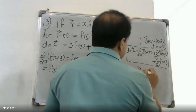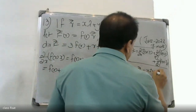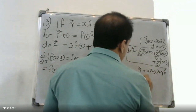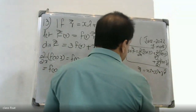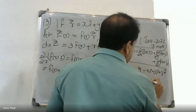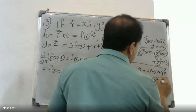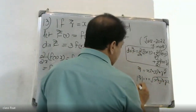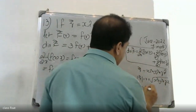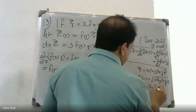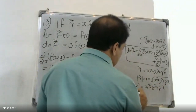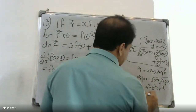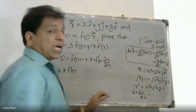We know that r equals square root of x squared plus y squared plus z squared, so we differentiate r partially with respect to x.